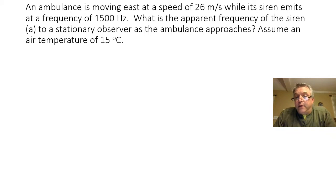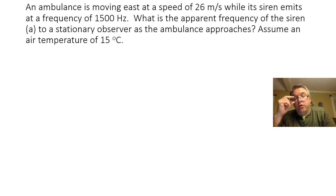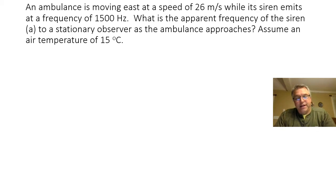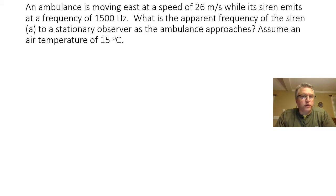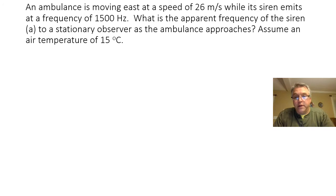Hello everybody. In this video we are going to be looking at the solution to the Physics 1 Doppler effect due right now, number one. Let's take a look at the problem. An ambulance is moving east at a speed of 26 meters per second while its siren emits at a frequency of 1500 hertz. What is the apparent frequency of the siren to a stationary observer as the ambulance approaches? We can assume that the air temperature is 15 degrees Celsius.